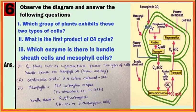Question number six is based on dark reaction of photosynthesis in C4 plants where the leaf has Kranz anatomy.